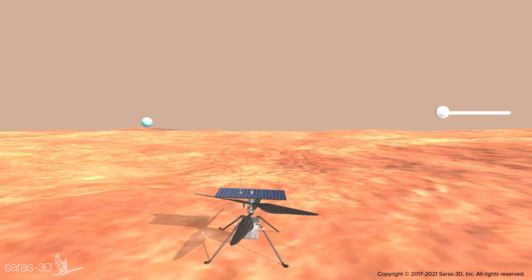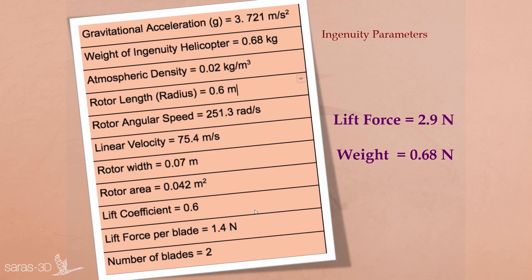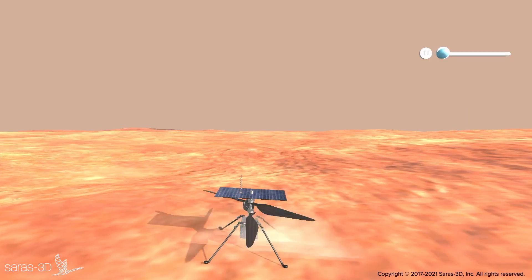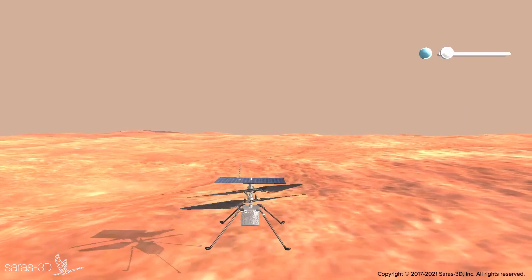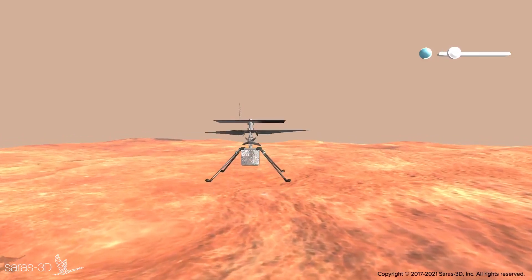With all these considerations, Ingenuity is an ingenious way to travel on Mars. Putting the Ingenuity parameters into the lift equation, we get a total lift force equal to 2.9 newtons, whereas the weight is 0.68 newtons. Since the lift force is more than the weight, the 19-inch tall Ingenuity lifted off the ground, hovered in place, slightly turned, and calmly touched back down. Incredible!